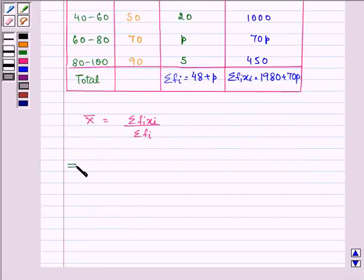Now the mean is given to us in the question as 47. So we have 47 equal to 1980 plus 70P divided by 48 plus P.